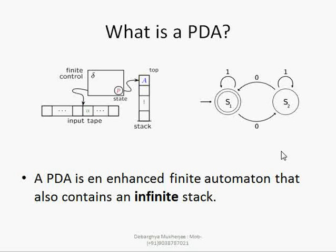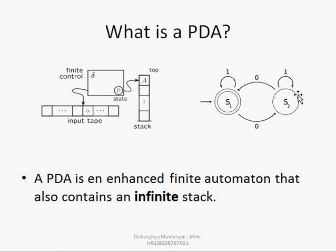At any time, if we know our current state and input symbol, we can tell from the delta or transition function where the control will go. But if we apply PDA, one third element comes in: what is in our stack. The symbol applied over a state, along with the topmost value in our stack, defines the next state.